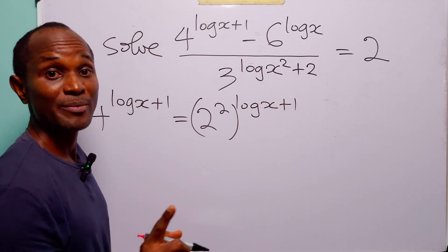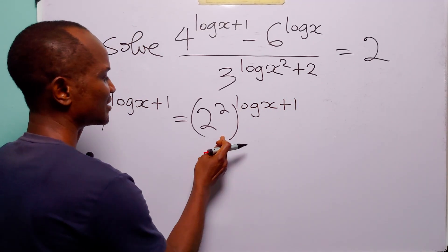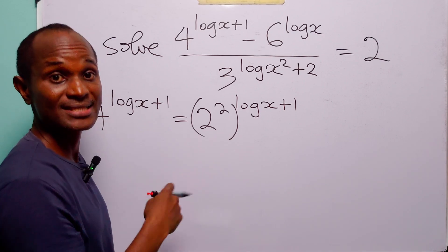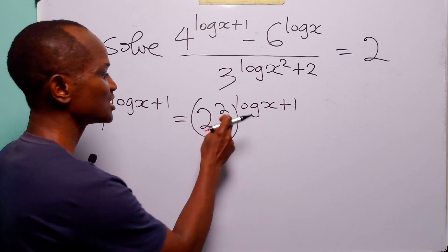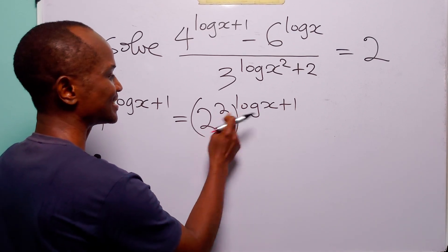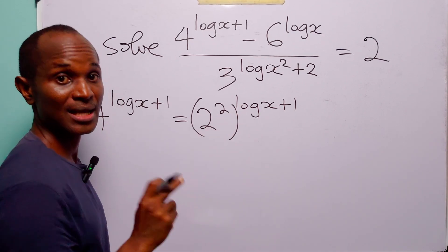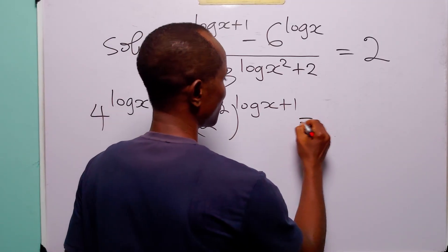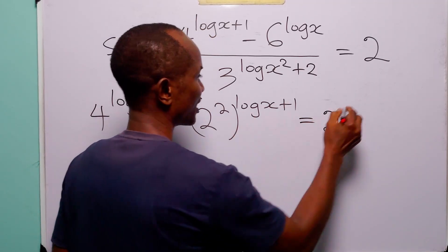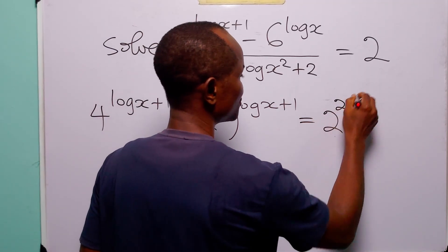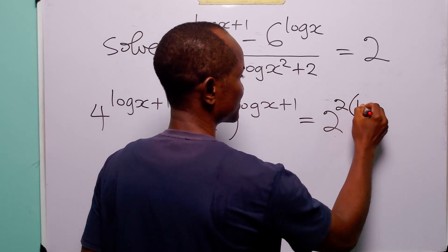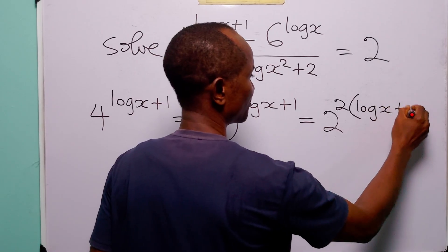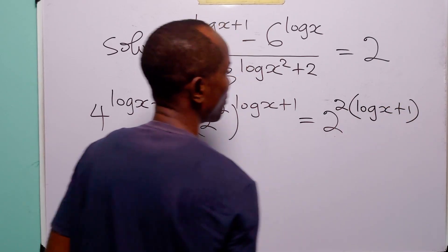Remember that when we have a situation like this, to get rid of the brackets we multiply the two powers. When we do that, this becomes 2 to the power 2 times log x plus 1.